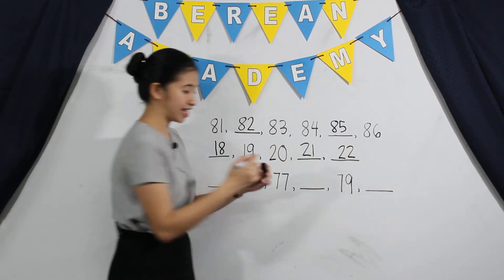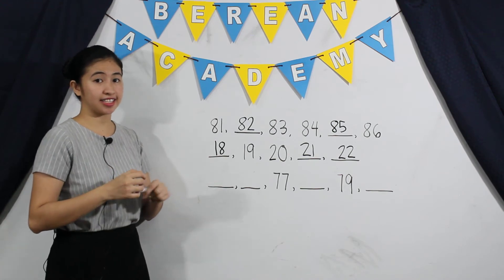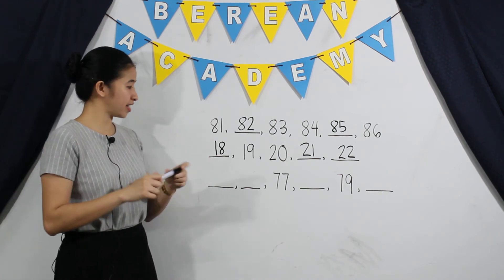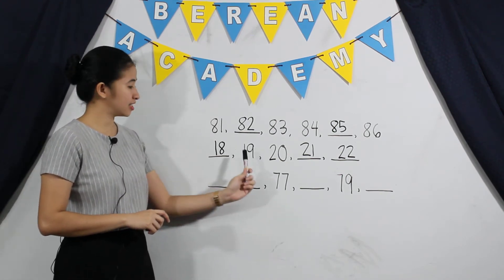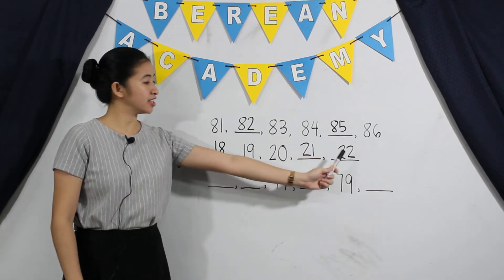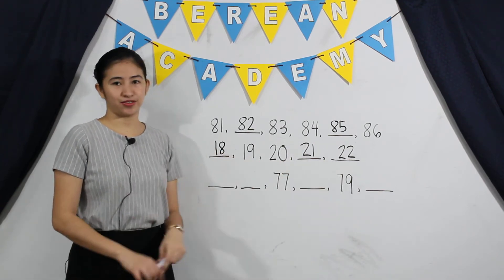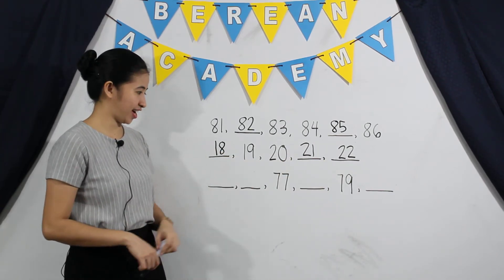So let's check if it is correct. Let's count up again: 18, 19, 20, 21, 22. So it is correct.